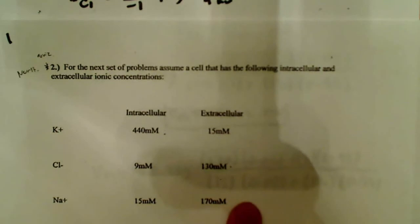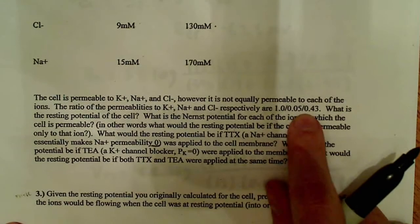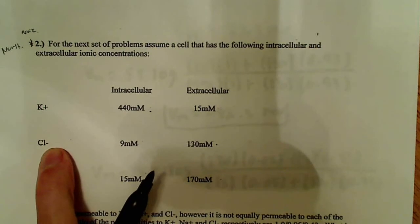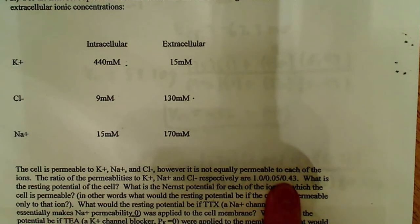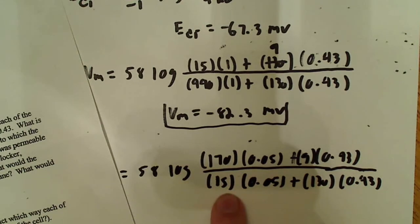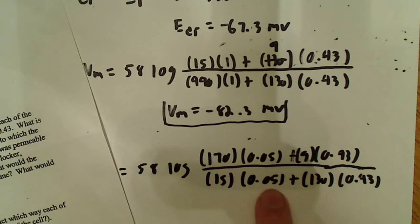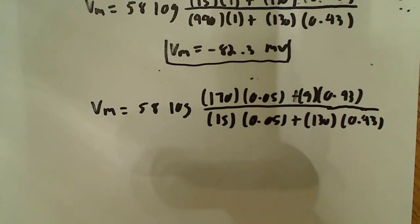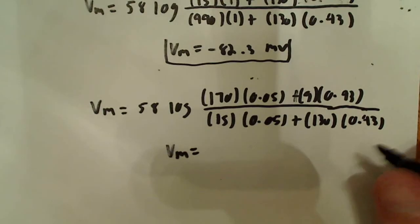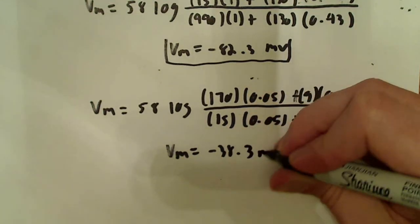Going back to the data set: the permeability for sodium outside the cell is 170, so that's 170 times 0.05, where 0.05 is the permeability constant. And remember, it's the inside of the cell we're concerned about for chloride, so it's 9 millimolar multiplied by 0.43. Then 15 millimolar inside goes on the bottom multiplied by 0.05, and 130 multiplied by 0.43. When you get this value, Vm equals negative 38.3 millivolts.